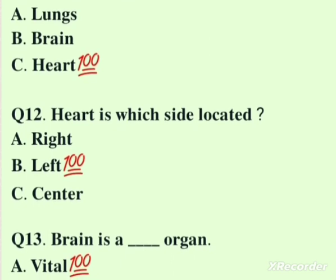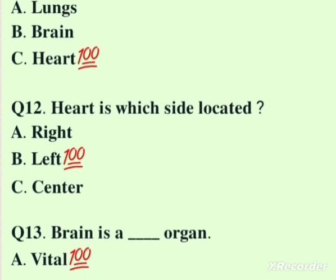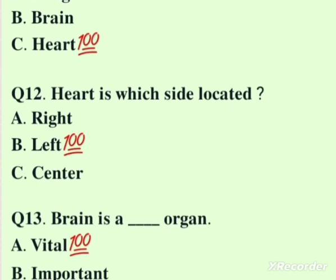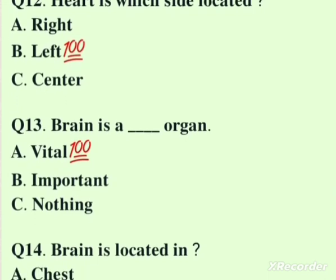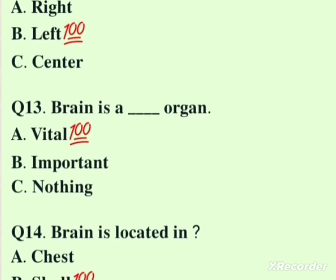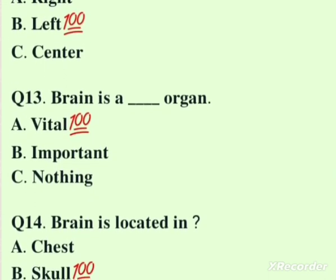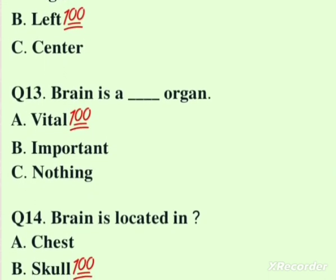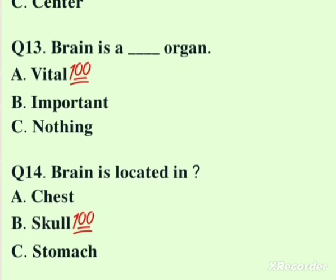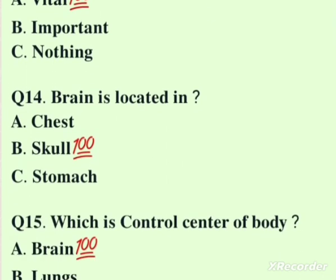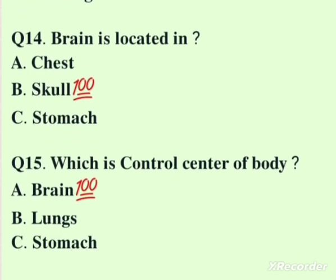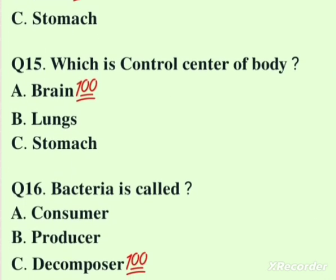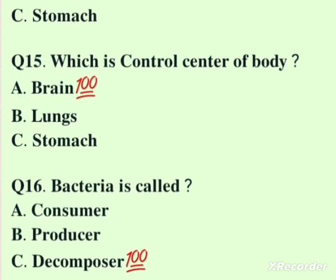The heart is located on the left side of the body. The brain is a vital organ located in the skull. The brain is the control center of the body.